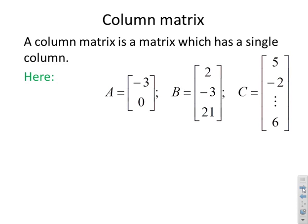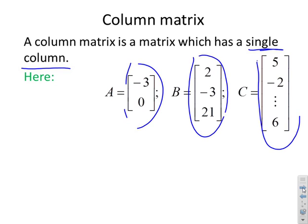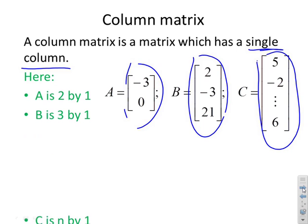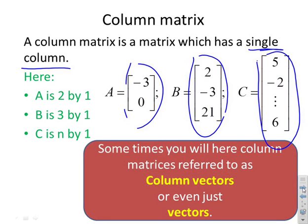What about column matrices? A column matrix is a matrix which has a single column. Here you'll see A has just one column, B has just one column, and C has just one column. A is 2 by 1, B is 3 by 1, and C is N by 1. Often these are denoted as column vectors or even just vectors — referring to them as vectors is more common than calling them a column matrix.